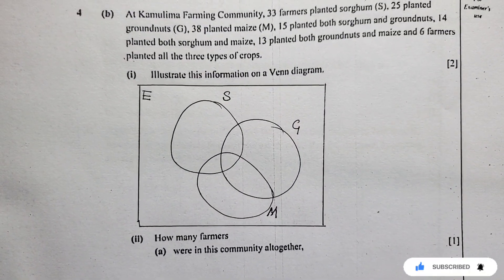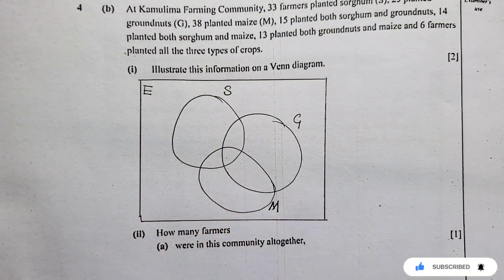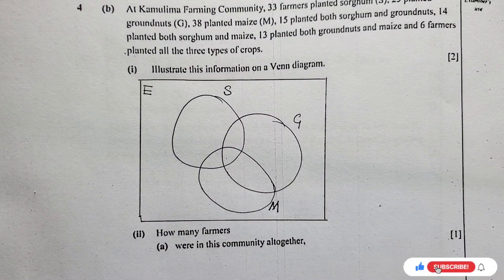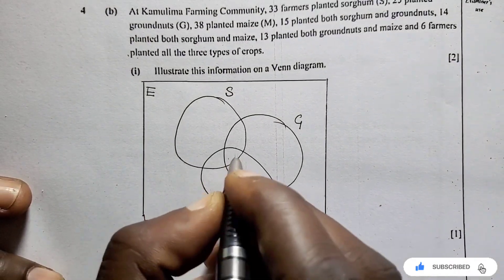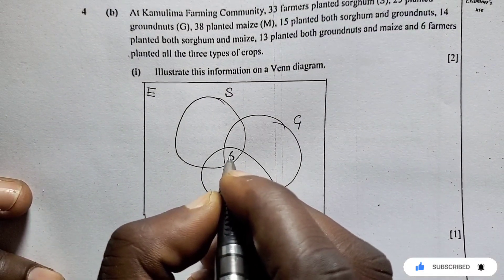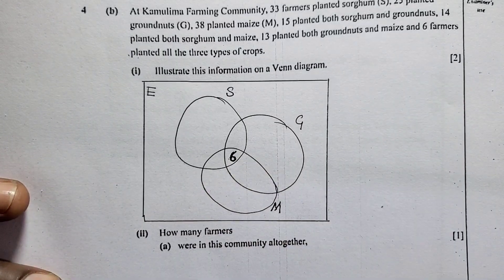We're going to start from the middle part. The middle part you write as it is. We are told that 6 farmers planted all 3 types of crops, so I'm going to write 6 in the center. That's the first step.